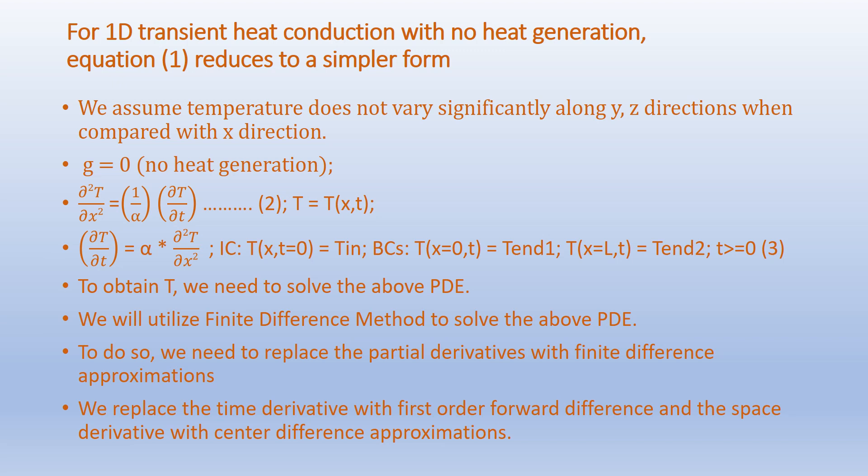The initial condition is given as T(x, t=0) = T_initial. The boundary conditions are: T(x=0, t) = T_n1 and T(x=L, t) = T_n2 for t ≥ 0. To obtain T we need to solve the above partial differential equation using the finite difference method, replacing the partial derivatives with finite difference approximations.